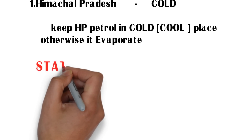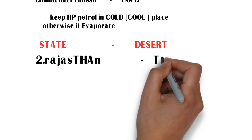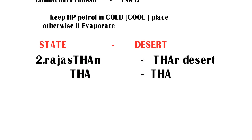The Thar Desert is in Rajasthan. If you observe these two words, both contain the same letters — T-H-A: Rajasthan and Thar both share 'tha'. So if you remember Rajasthan, you can easily remember Thar Desert, since no other desert has a similar word.